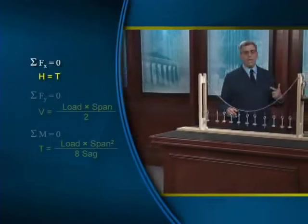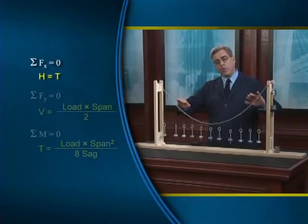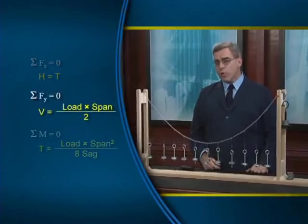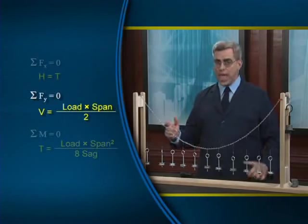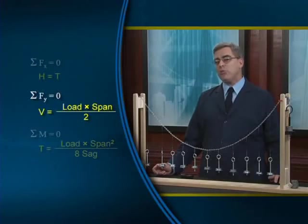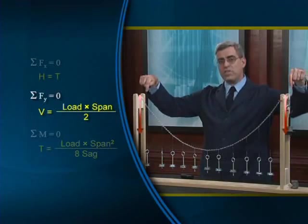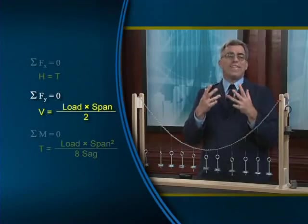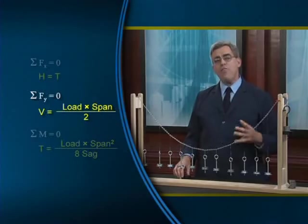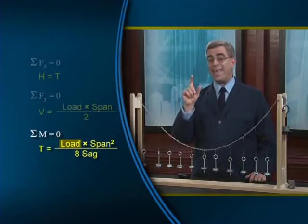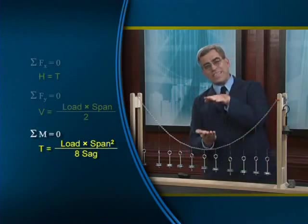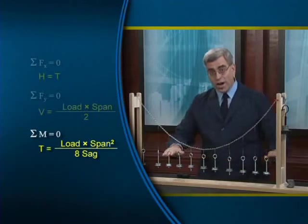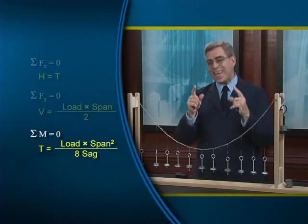First, the horizontal reaction H is equal to the cable tension T — so the greater the tension, the greater the outward pull needed to hold the cable in place. Second, the vertical reaction equals half the total load applied to the cable. Third, the cable tension is proportional to the load and inversely proportional to the sag: a larger load causes larger cable tension, and if we hold the load constant, a larger tension results in less cable sag.